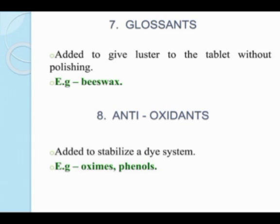Eighth is antioxidants. Antioxidants are added to stabilize the dye system. Examples are oxines and phenols. Antioxidants are added to prevent oxidation, meaning they prevent rancidity and keep the product from developing foul or bitter smell. These are added to stabilize the dye system.